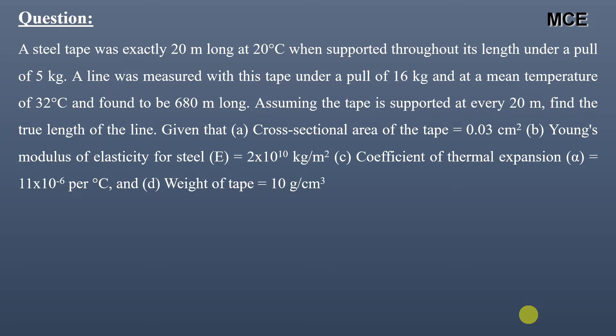We have to find the true length of the line. Given data: cross-sectional area of the tape is 0.03 cm², Young's modulus of elasticity is 2×10¹⁰ kg/m², coefficient of thermal expansion of steel tape is 11×10⁻⁶ per degree centigrade, and the weight of the tape is 10 grams per cm³.